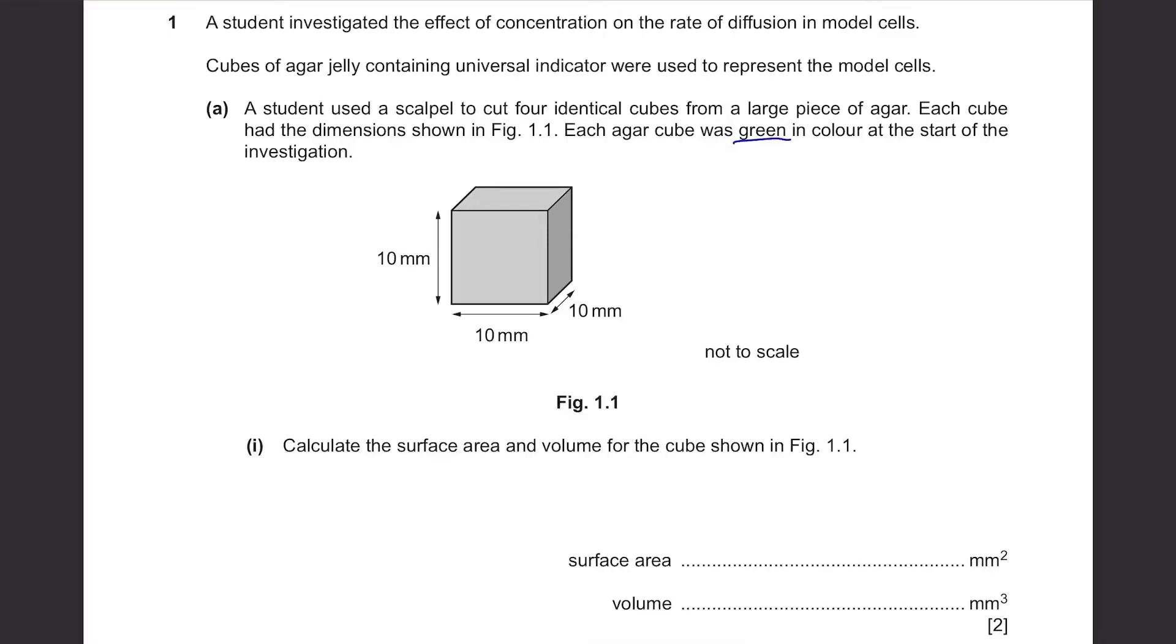To calculate the surface area, you find the area of one side of the cube first. It's 10 times 10, 100. Then there are 6 sides like this, so you multiply it by 6 again. It's 600 mm square.